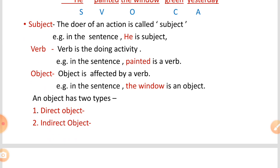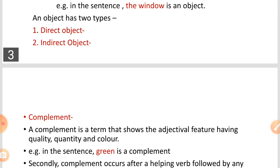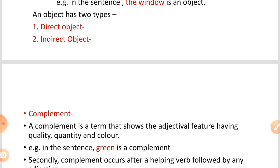Object is affected by a verb. For example, in the sentence, 'the window' is an object. An object has two types: direct and indirect. We will cover these in detail in the next topic.